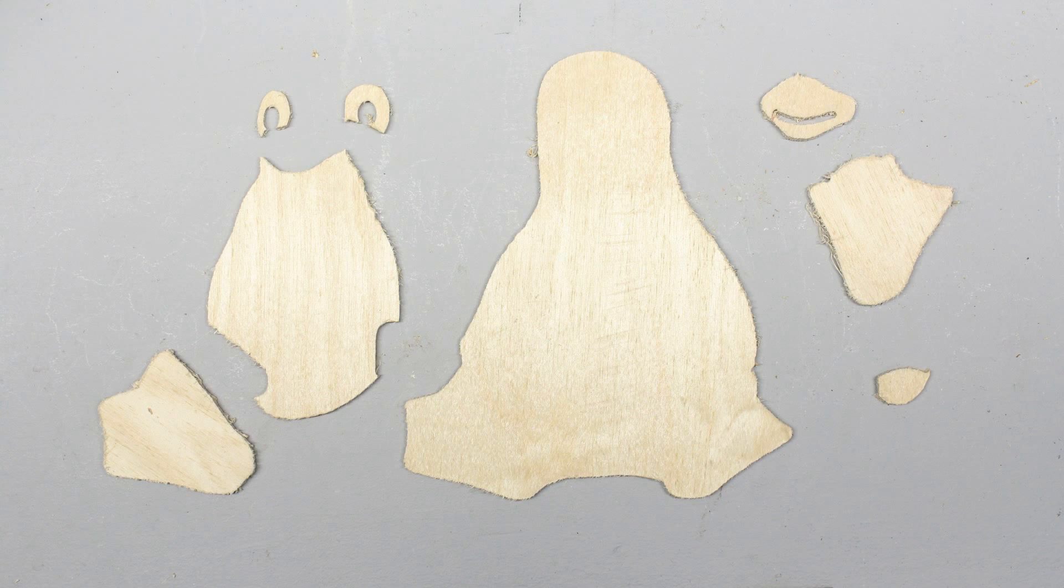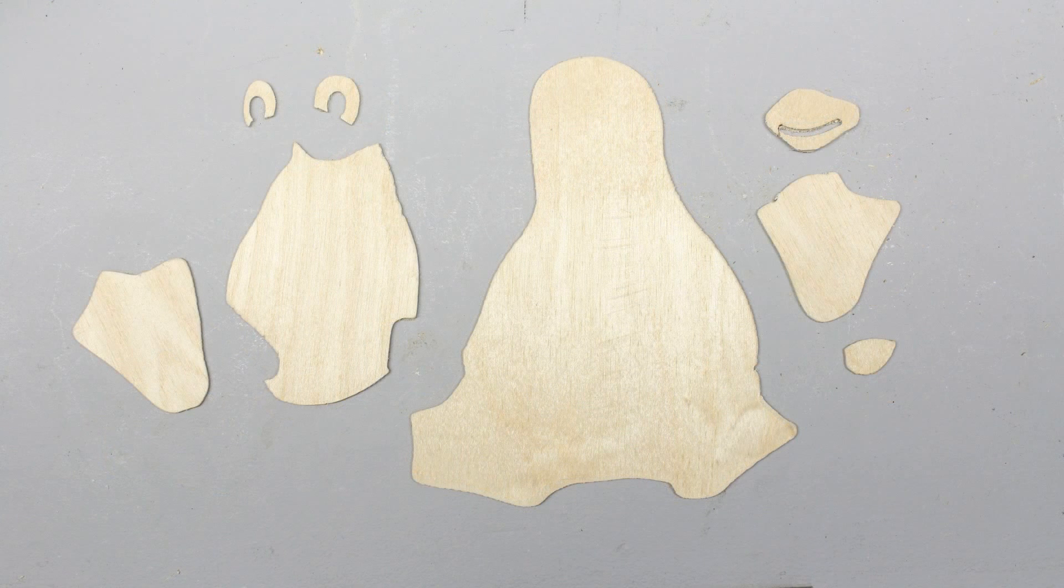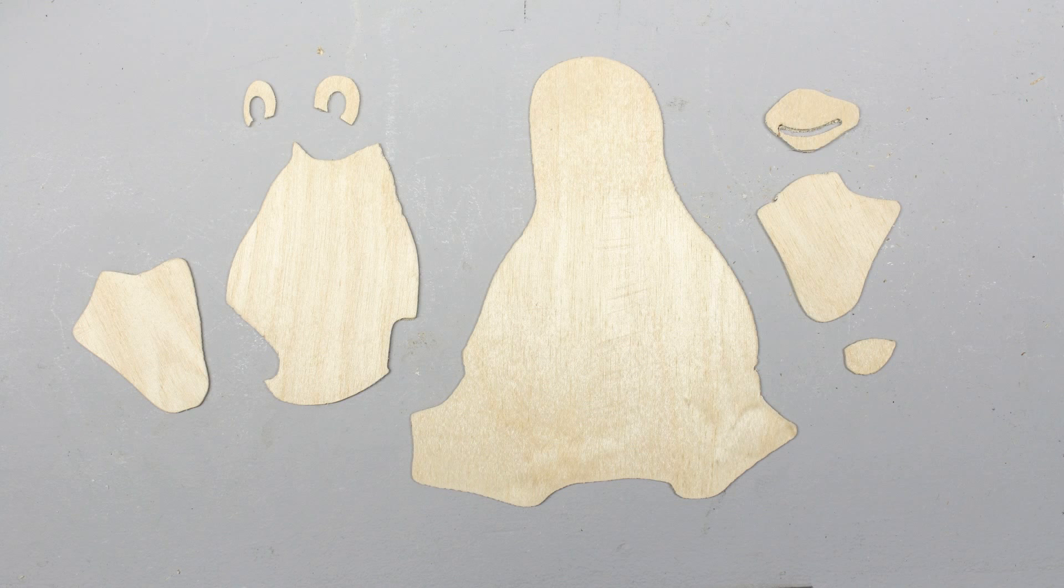When the machine has finished its work, the edges have to be smoothened with sandpaper. Put raw material in and get perfect parts out is nothing you get with cheap machines.